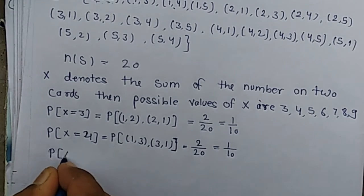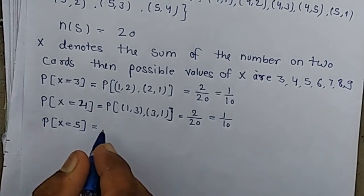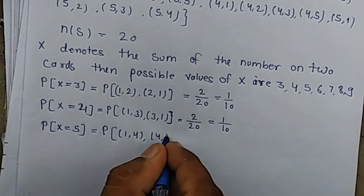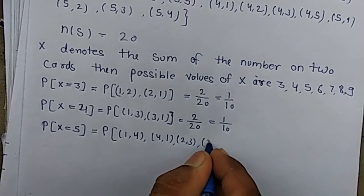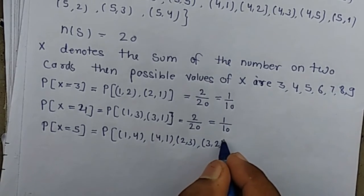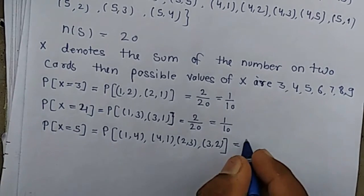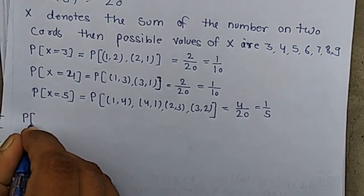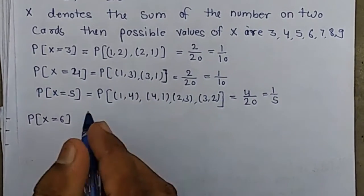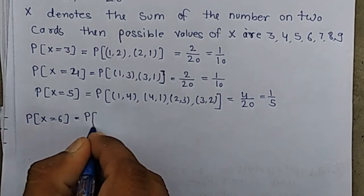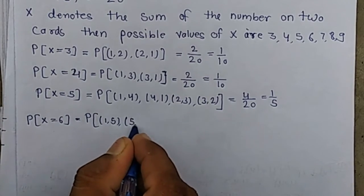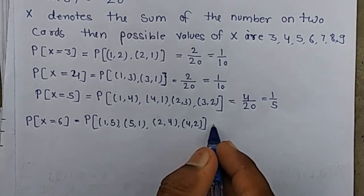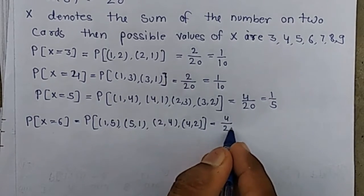P(X=5): the pairs giving sum 5 are (1,4), (4,1), (2,3), (3,2) — 4 possibilities, so P(X=5) = 4/20 = 1/5. P(X=6): the pairs giving sum 6 are (1,5), (5,1), (2,4), (4,2) — also 4 possibilities, so P(X=6) = 4/20 = 1/5.